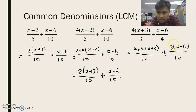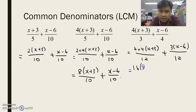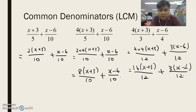Take note that I need to put brackets here. Because if I don't put brackets, I will only be multiplying 3 to x, which is not correct — I need to multiply 3 to the whole numerator. So we need to put the brackets. If we simplify it, we'll get 16(x + 3) over 12, plus 3(x − 6) over 12. This is how we obtain a common denominator for all these different kinds of questions.